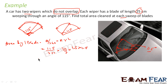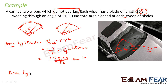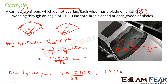Solving this gives 158125/252 centimeter square — that is the area for one blade. Since there are two wipers, the area for two wipers is twice this value: 2 × (158125/252) = 158125/126 centimeter square. This is the total area covered by the two wipers.